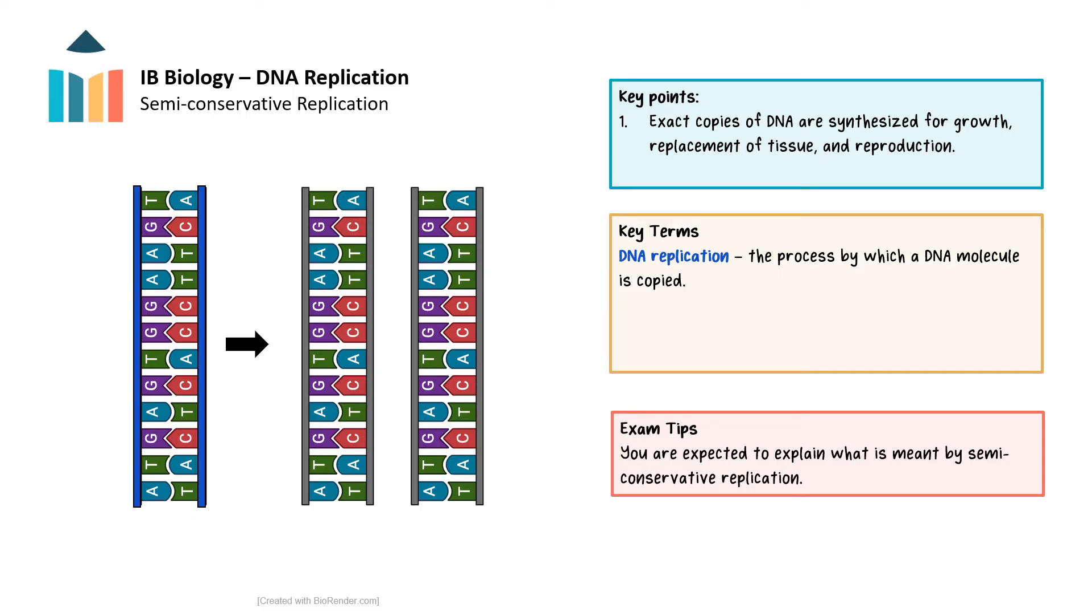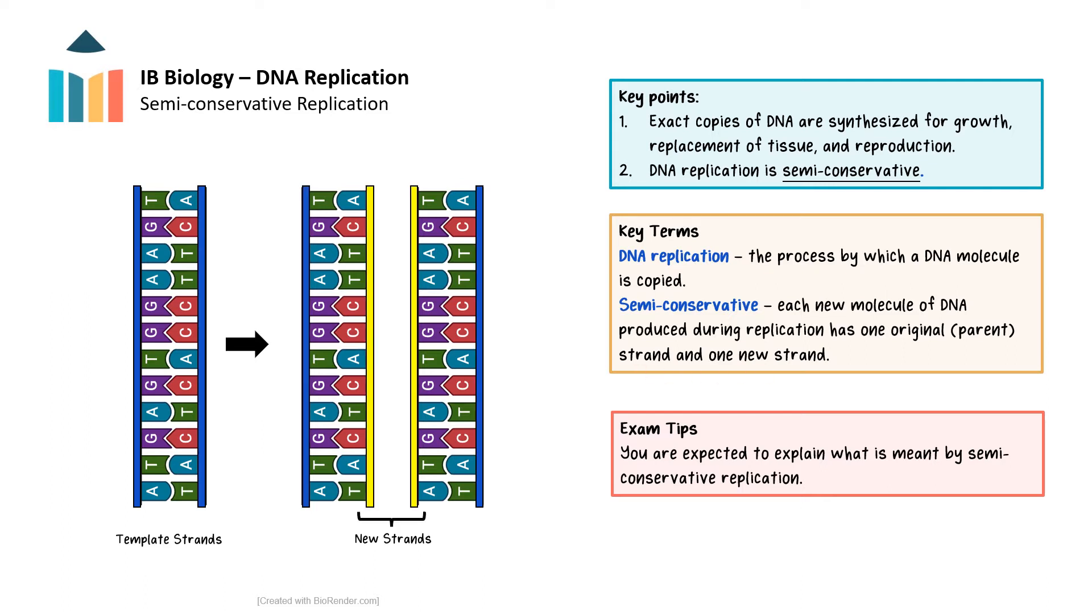Semi-conservative replication is the mechanism by which DNA replicates itself. The term semi-conservative refers to the fact that each newly synthesized DNA molecule contains one original or parental strand and one newly synthesized or daughter strand. We can see this in the diagram shown here. In molecules of DNA, the blue strand originates from the parental strand and the yellow strand is the daughter strand. We call this semi-conservative since some of the original DNA molecule is conserved.